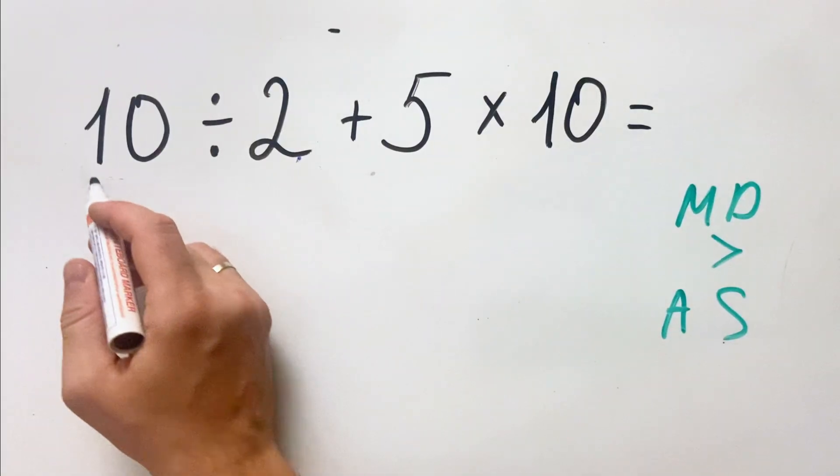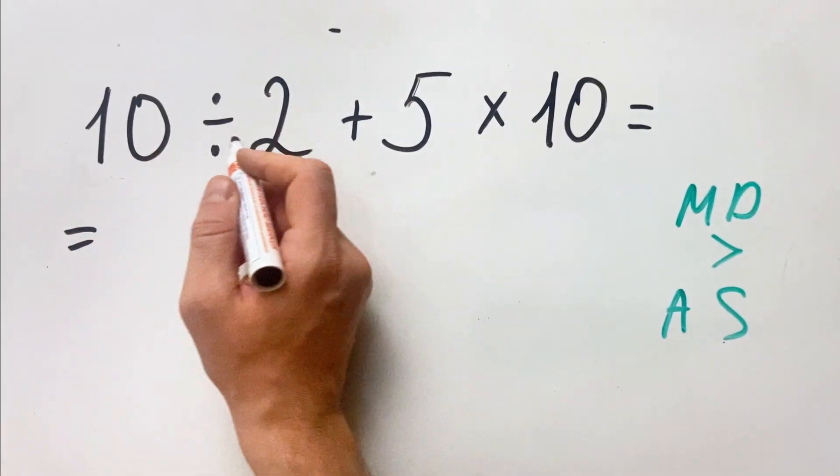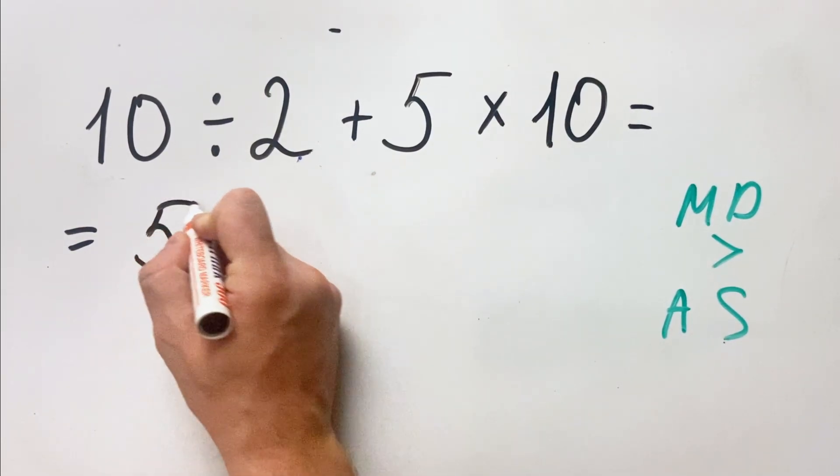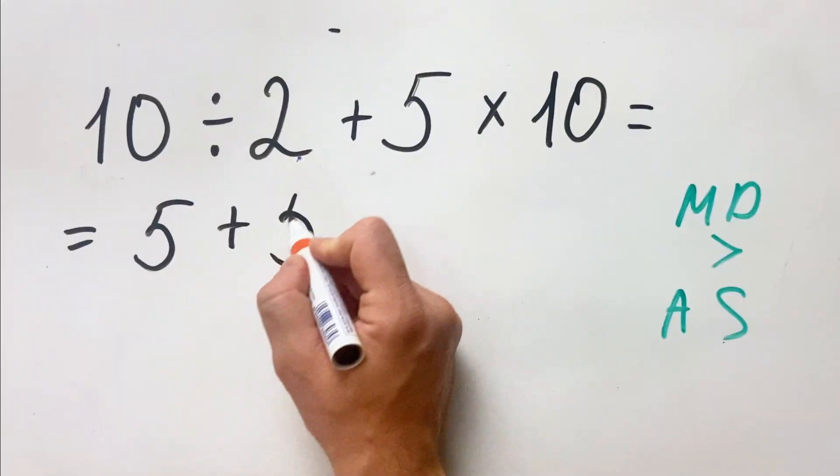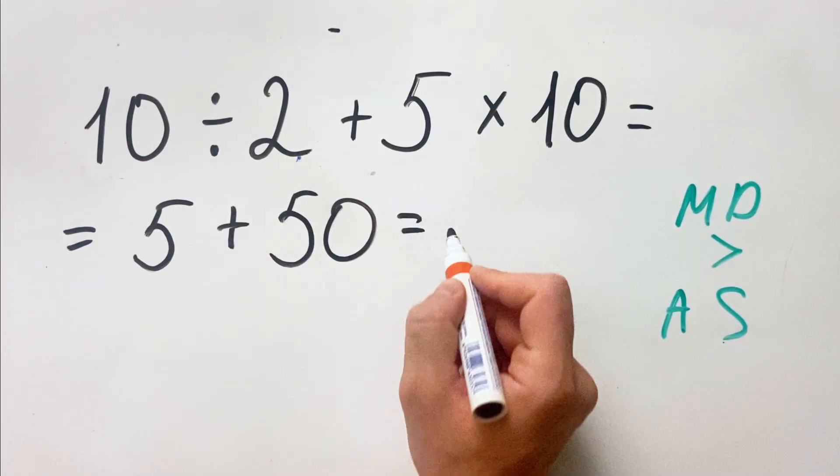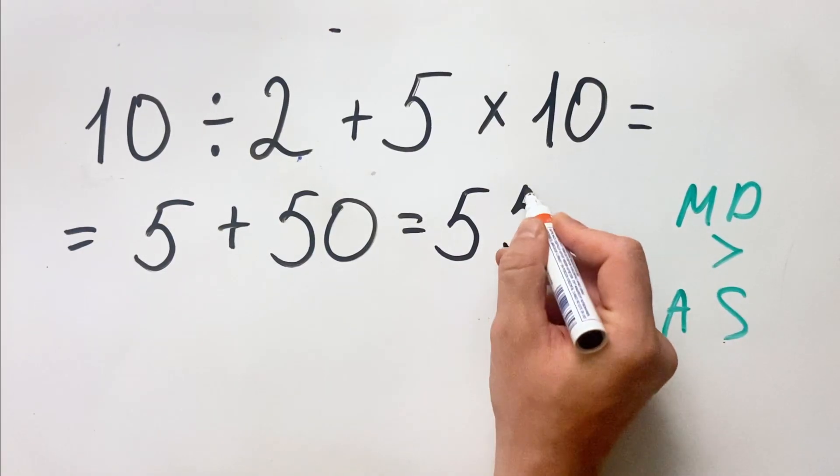So the correct approach would be: first to do the division, then multiplication. We have 10 divided by 2 is 5, plus 5 multiplied by 10 is 50, and of course 5 plus 50 equals 55.